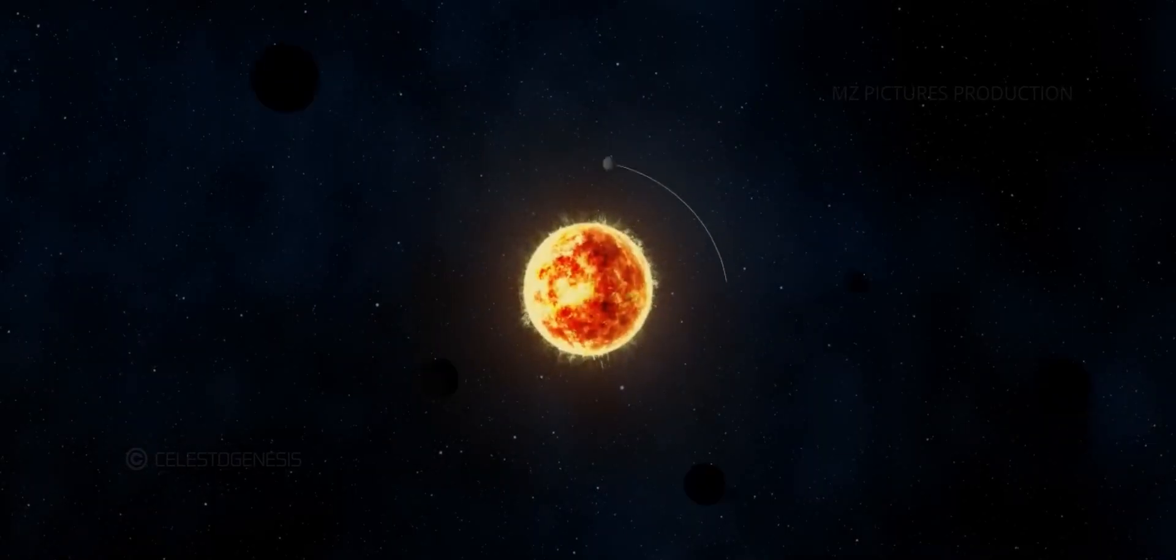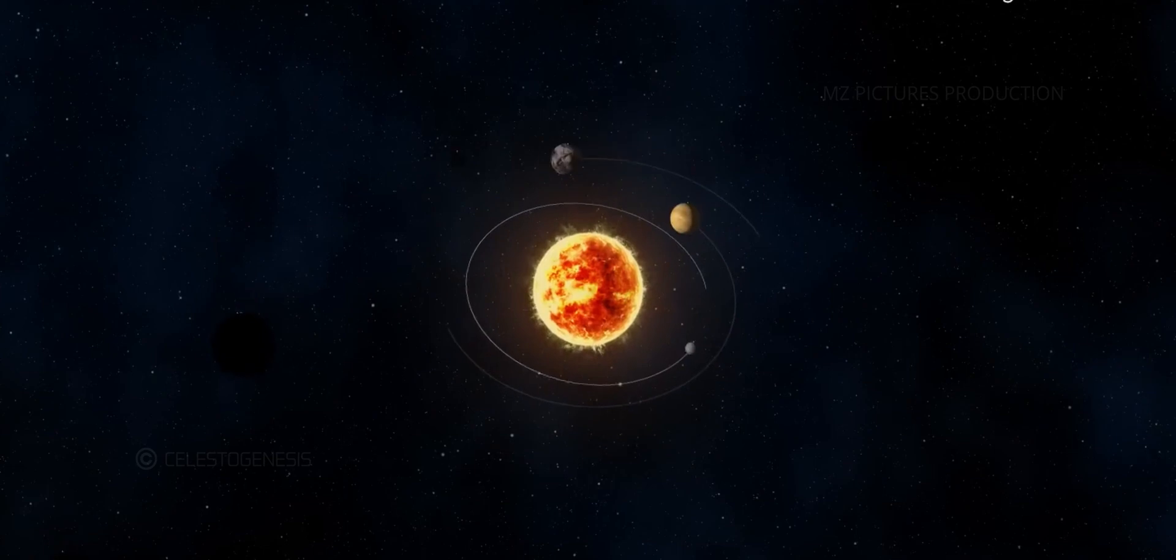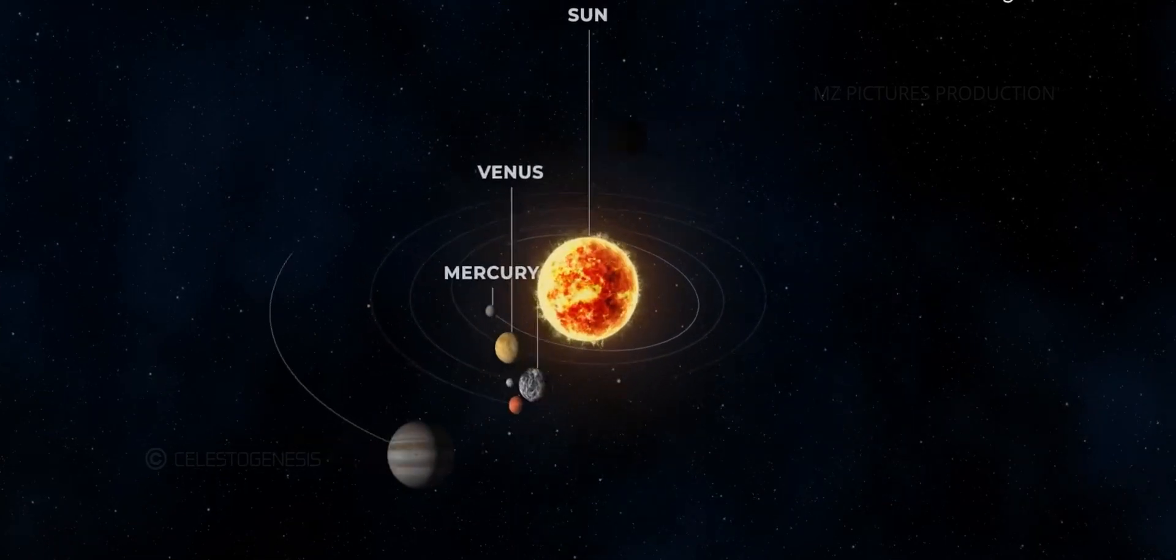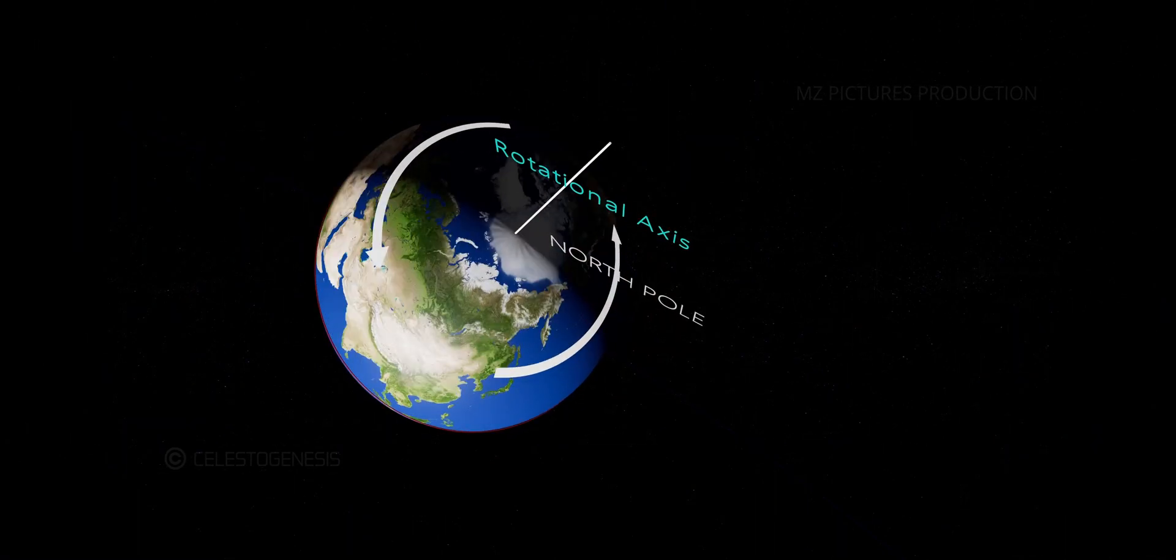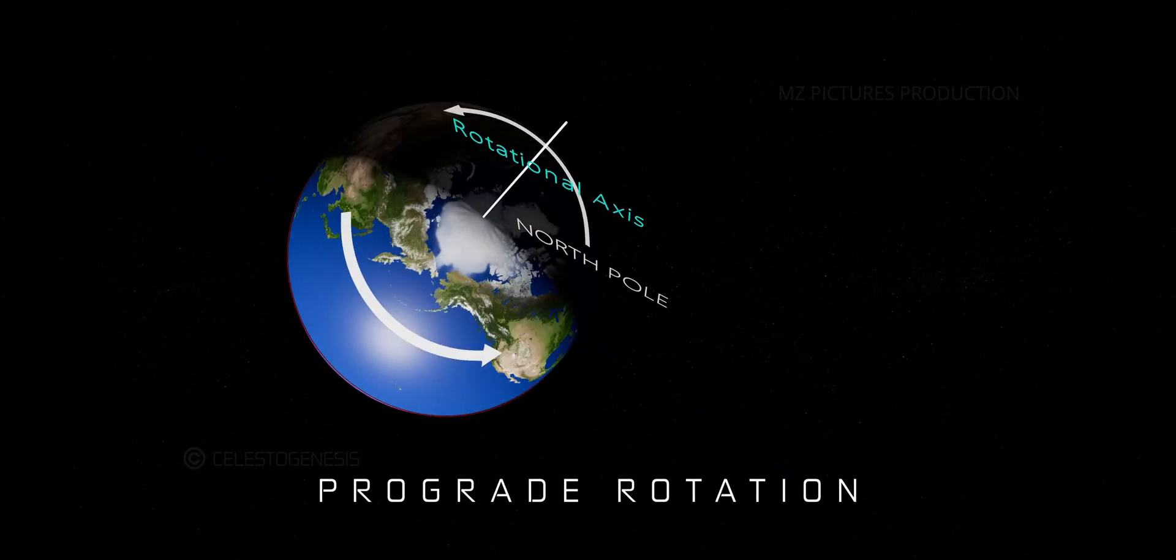Planets in our solar system rotate on their axis, causing the cycle of day and night as different parts of the planet face the sun. Most planets, including Earth, rotate counterclockwise when viewed from above their north poles, known as prograde rotation.